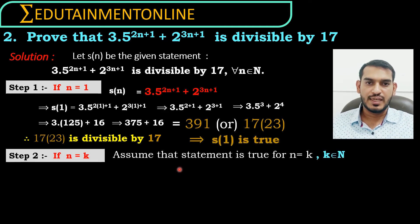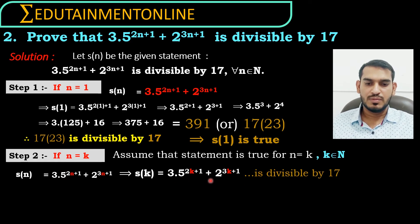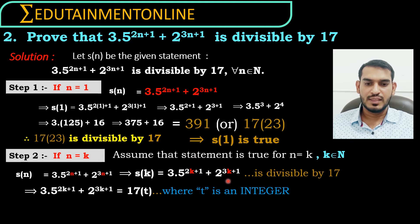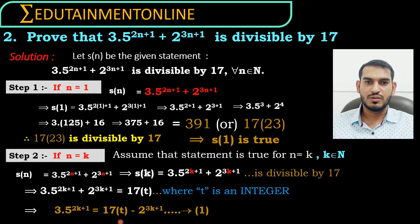Now let us assume that s of n is true for n equals k. So s of k is 3 into 5 power 2k plus 1 plus 2 power 3k plus 1, and it is divisible by 17. We are assuming this is divisible by 17, so this can be written as 17 times t, where t is some integer. Transposing the 2 power 3k plus 1 to the right-hand side gives 3 into 5 power 2k plus 1 equals 17t minus 2 power 3k plus 1. Consider this as equation 1.